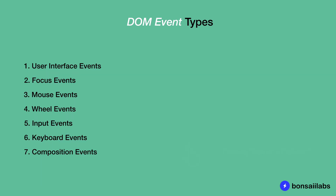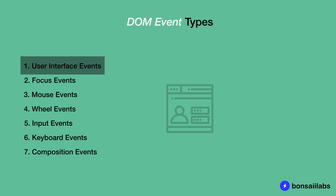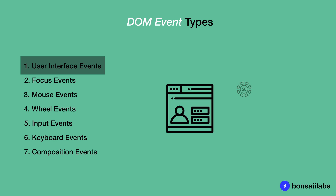The DOM event types are categorized into seven different types, including user interface, focus, mouse, and composition events. The user interface category contains the basic event types associated with user interfaces and document manipulation. The events included in this category are the load and unload of the page, errors that occur on load or when the page load is aborted, and the user selection of text on the page.